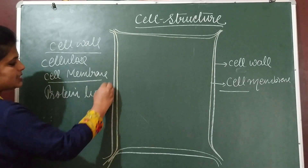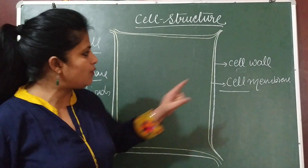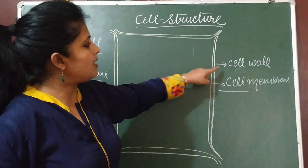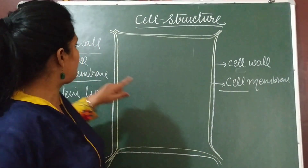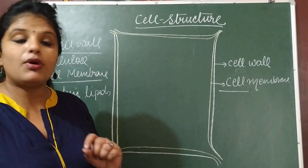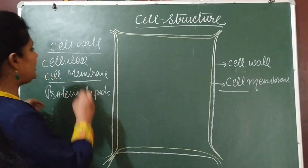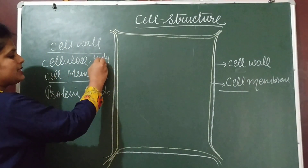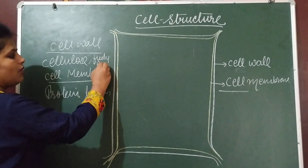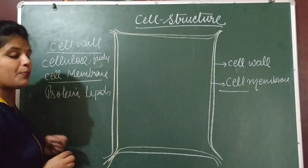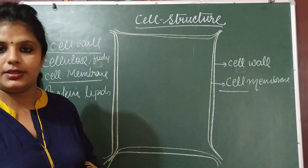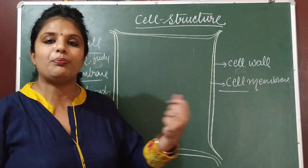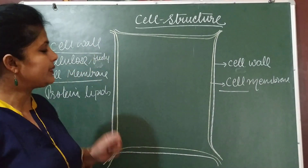Cell wall is an additional layer in plant cell. Cell wall is made up of cellulose. Cell wall is freely permeable, meaning it allows all substances to pass through it — water, minerals, everything can pass through the cell wall.